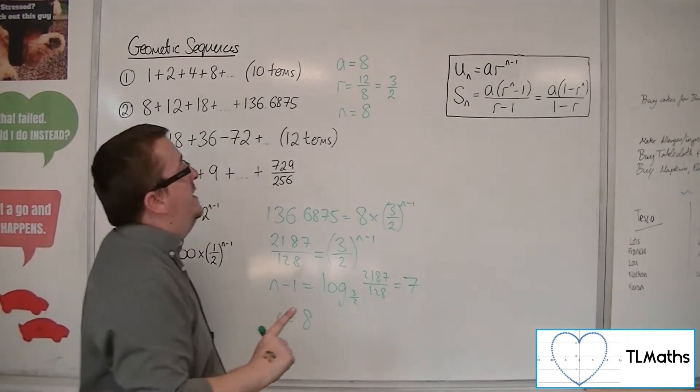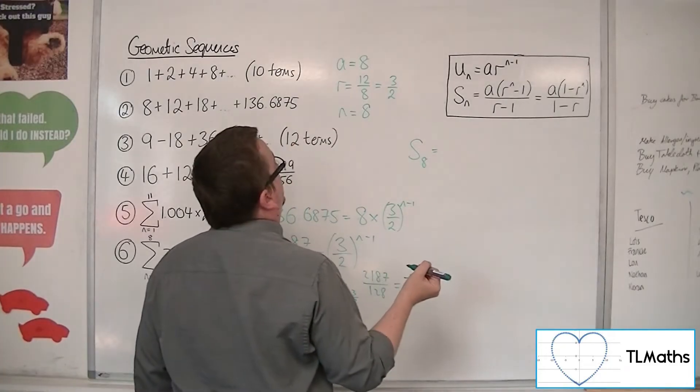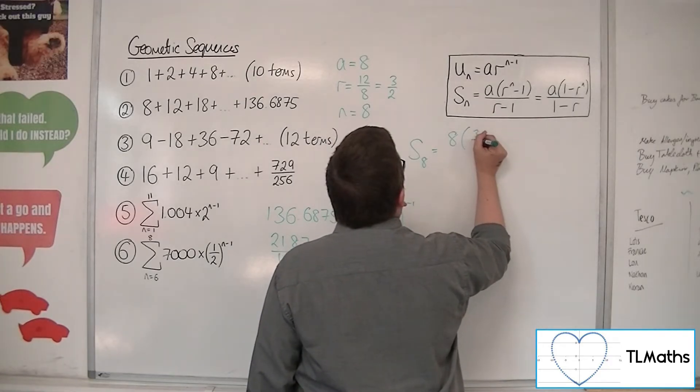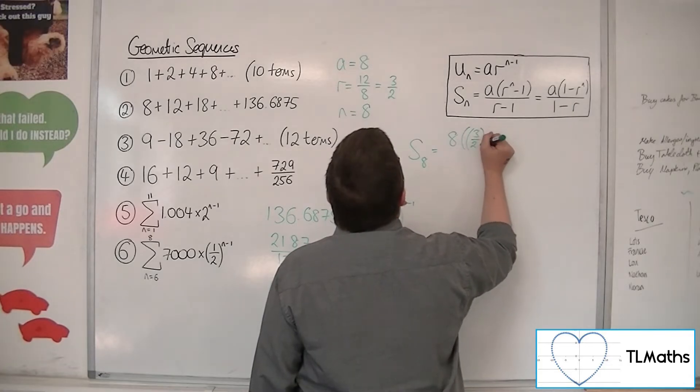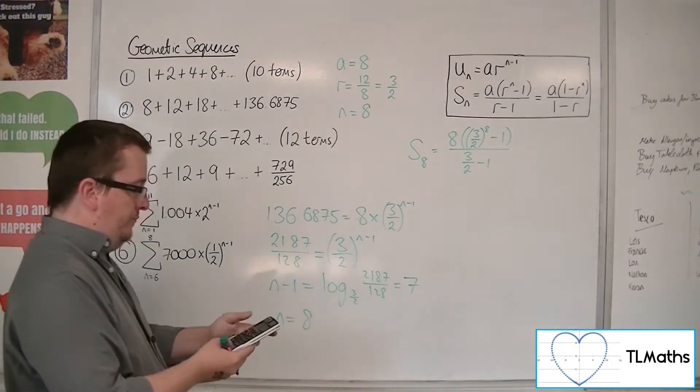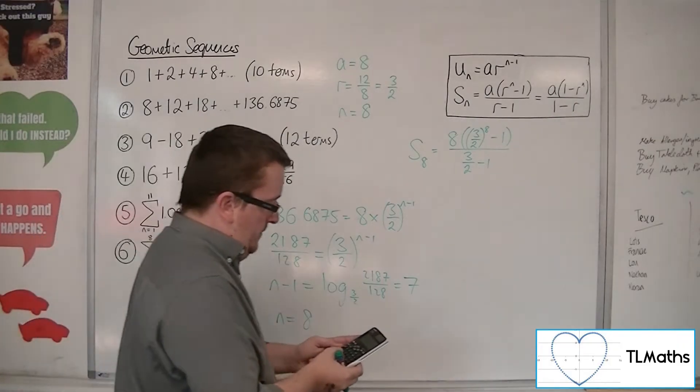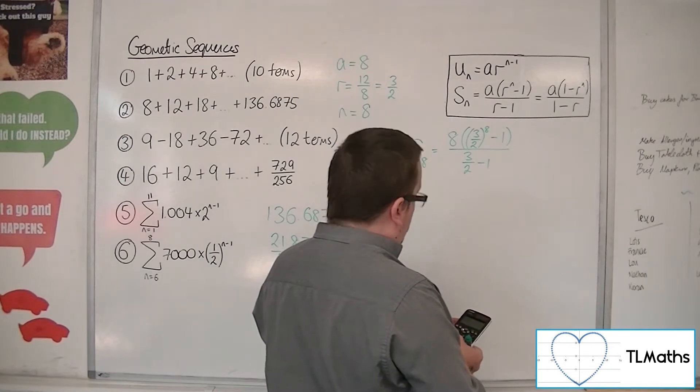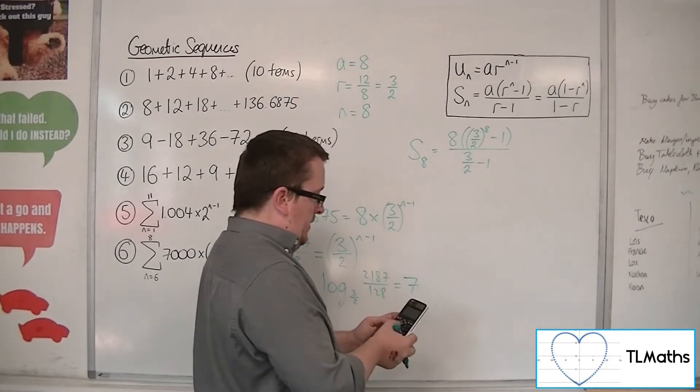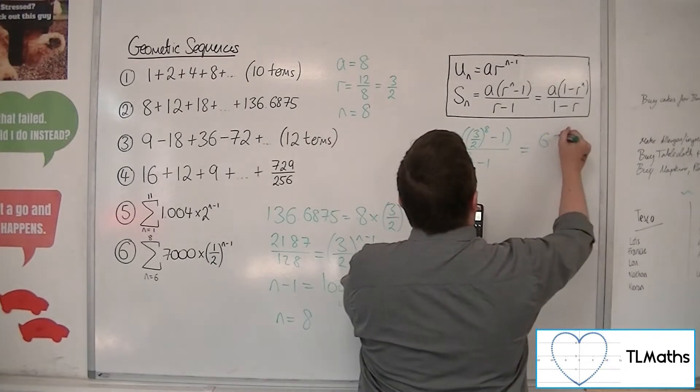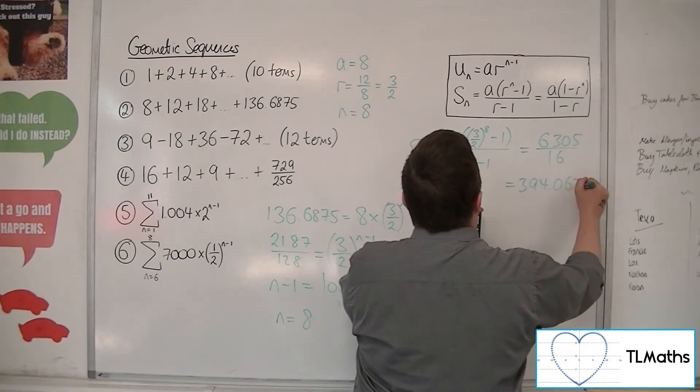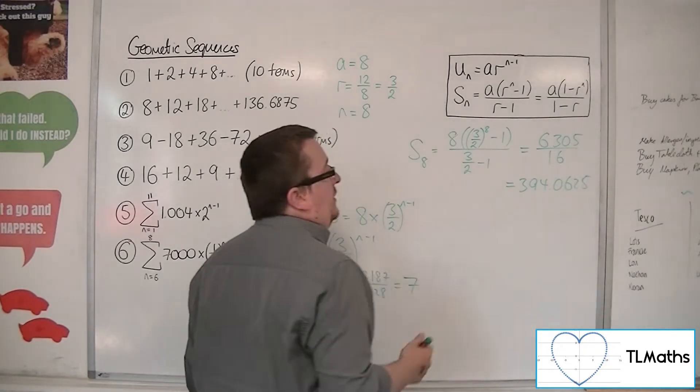So with that knowledge, I can now find the sum of the first 8 terms, which is 8a, so I'm going to use this formula here, times by 3 halves to the n, so 3 halves to the 8, take away 1, all over r, so 3 halves, take away 1. So in the numerator, 8, open 2 brackets here, 3 halves, close the bracket to the power of 8, take away 1, and in the denominator, 3 halves, take away 1. So overall, we've got 6305 over 16, which is 394.0625. Either of those are perfectly fine as exact answers.